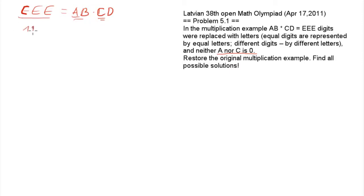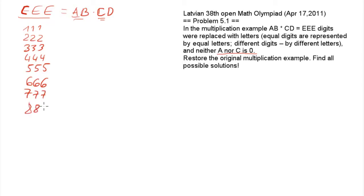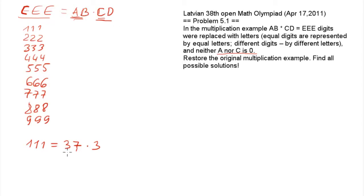Let's write out all the possibilities and notice that all of them are multiples of 111. And 111 can be factored as a product of two primes: 37 times 3. So any of these nine numbers, if you express them as this product, either AB or CD should be divisible by 37. There are only two two-digit numbers divisible by 37: 37 itself and also 74.